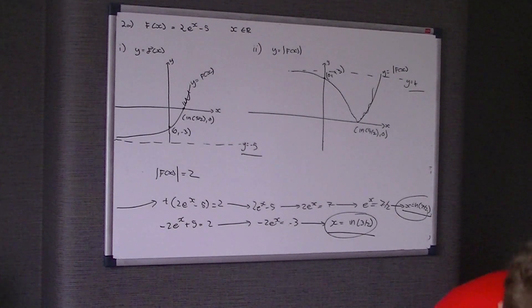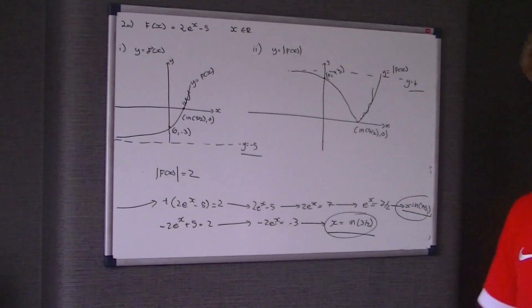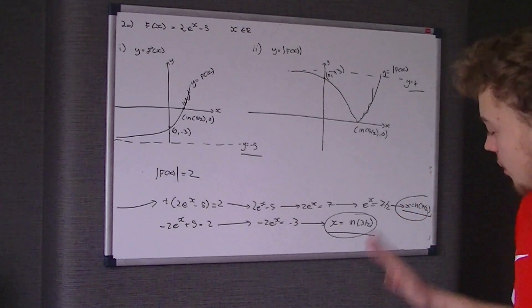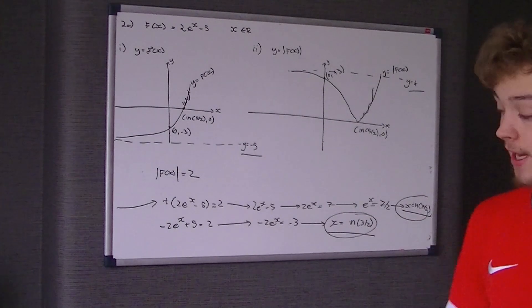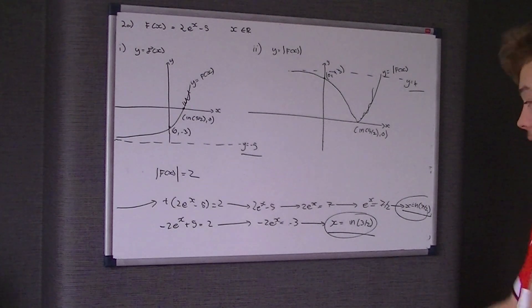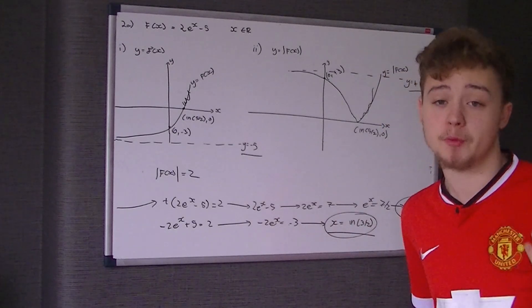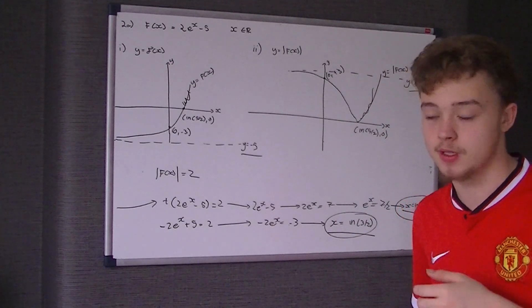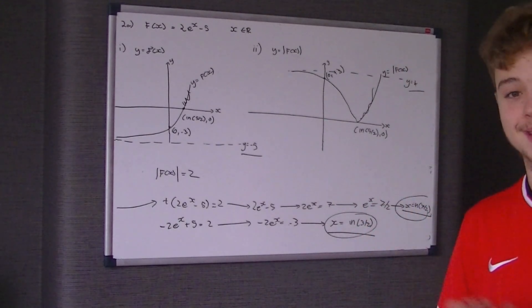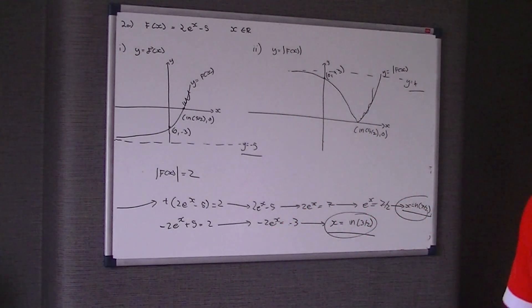That's worth 3 marks. It does say exact solutions, so obviously we wouldn't work them out as decimals. I would only change to decimals if it specifically asked you to — otherwise you're getting yourself in a mess. Examiners prefer exact form, and it also means anyone can verify the answer by computing it from the exact expression.